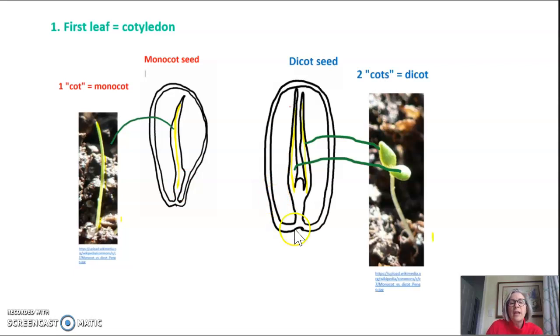When you see a dicot sprouting from the ground it initially comes up and opens up with two first leaves or two cotyledons, which is where the term dicot comes from. If you look at a dicot seed you would of course see the large endosperm and you would see the embryonic plant with two cotyledons or two first leaves.